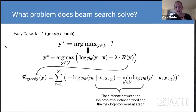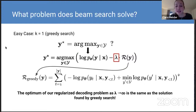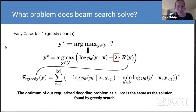If we use this regularizer, we can get the same solution as greedy search as we take lambda to infinity. To give this in words: we're looking at the distance between the log probability of our chosen word and that of the highest probability word at that given time step. As lambda goes to infinity and this penalty starts to overwhelm the objective, we will necessarily have to choose the highest probability word at each time step in order not to have our objective evaluate to negative infinity.